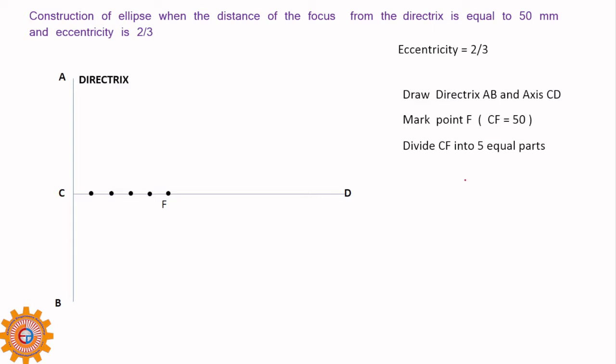Each part will have 10 mm distance. So 5 parts are there. Now we have to locate the point V, that is called the vertex of that ellipse. Now draw a perpendicular VE from V that is equal to VF. So the VE is equal to VF. Before drawing vertical lines, you have to point to these equal parts.